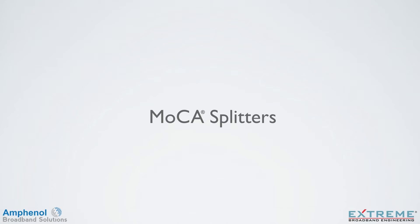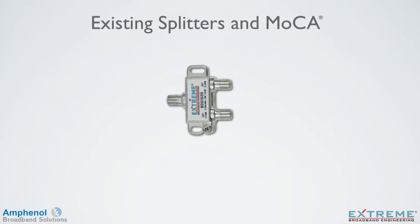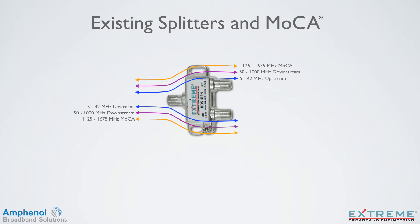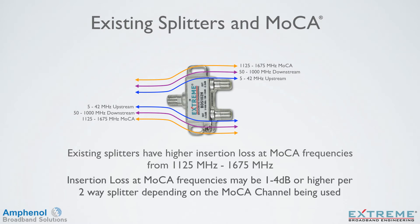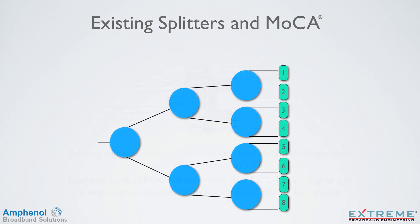Let's now look at MoCA splitters. There are a couple of limitations that traditional splitters have with the MoCA signal. First, since they're rated up to 1002 MHz, there's no guarantee to their performance at the MoCA frequencies. Existing splitters have higher insertion loss at MoCA frequencies from 1125 MHz to 1675 MHz, and can be 1 to 4 dB or higher per two-way splitter, depending on the MoCA channel being used. Second, since MoCA needs to use the port-to-port isolation path to communicate between devices, this can be a very high loss, especially if using eight-way splitters. Here we're showing the port-to-port isolation loss that could occur through an eight-way splitter at one of the higher MoCA frequencies.